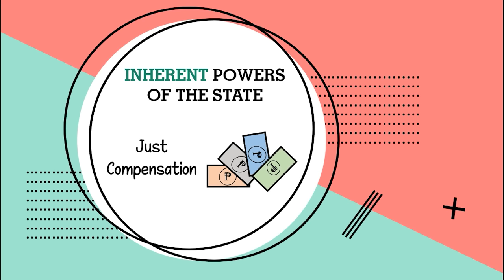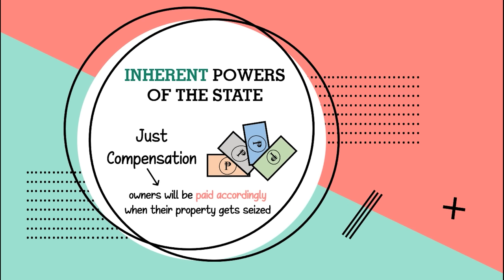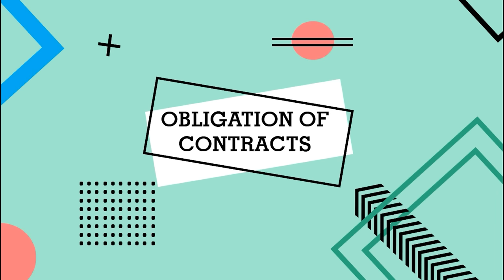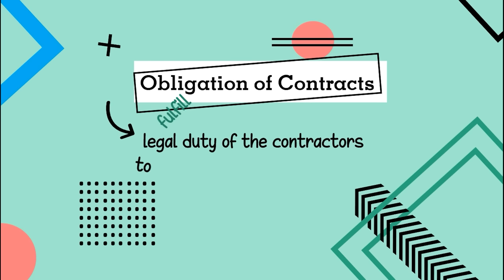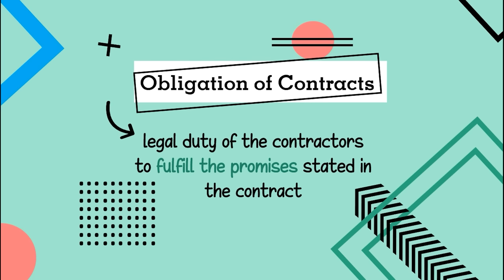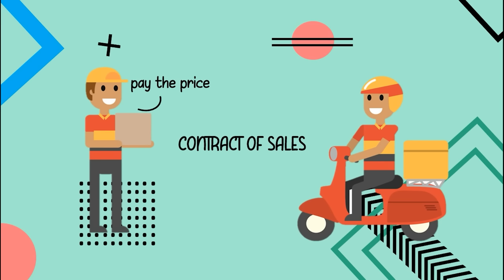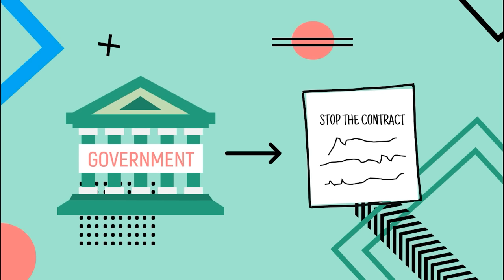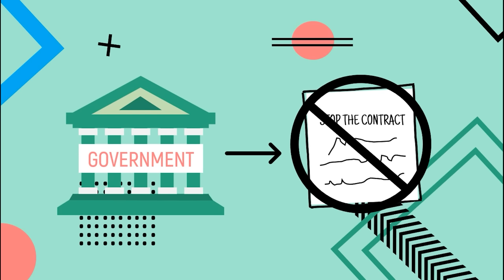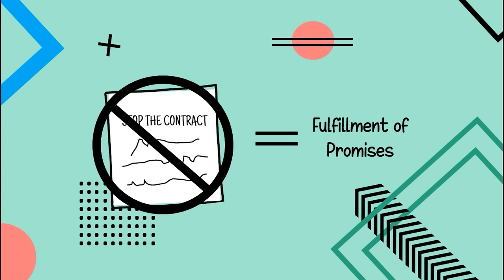Just compensation means that owners will be paid accordingly when their property is seized by the government for public use. Now let's talk about the obligation of contracts — the legal duty of contractors to fulfill the promise stated in the contract. For example, in a contract of sale, the buyer must pay the agreed price while the seller must deliver the item. The government cannot pass a law that would stop a contract from being enforced. The purpose of this non-impairment prohibition is to assure the fulfillment of promises between parties and to avoid problems.